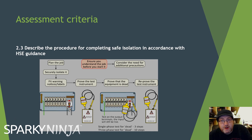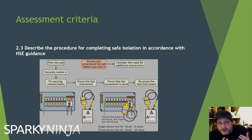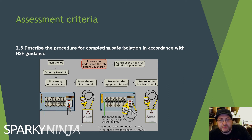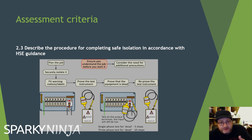Criterion 2.3: describe the procedure for completing safe isolation in accordance with the guidance. It doesn't just say know how to do it — you need to be able to word it, write it down, which fundamentally you should be able to do for a RAMS or a risk assessment anyway. You shouldn't just say 'I do safe isolation procedures'; you should actually state a process and make sure the process is working.